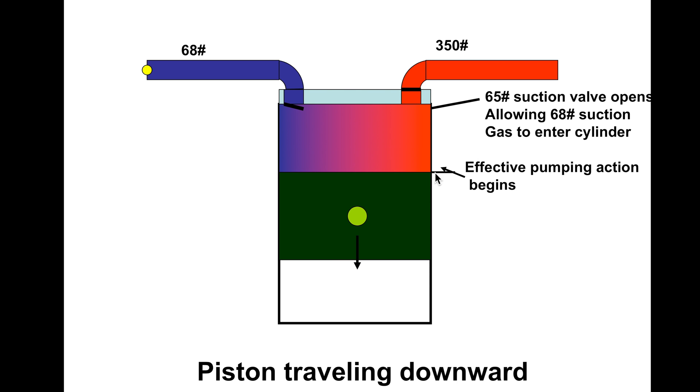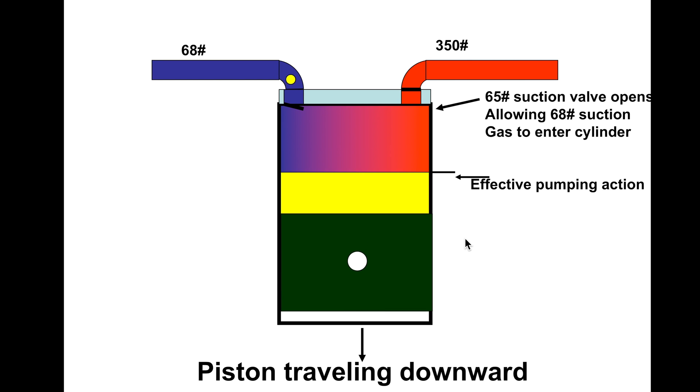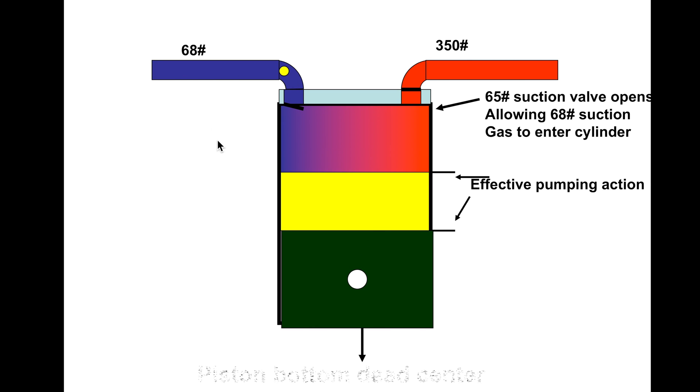All we were doing is re-expanding the gas. Now the piston goes all the way down, we are pulling gas in. Notice the effective pumping action, it's a lot less than it was when we had a 250 pound pressure instead of this 350.